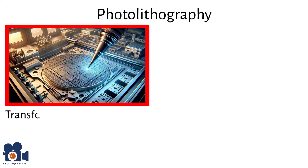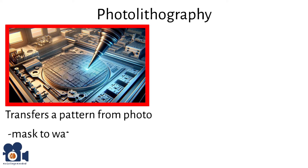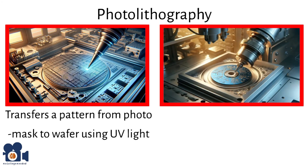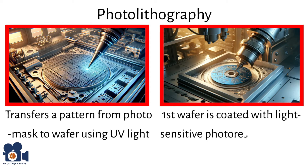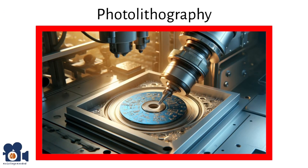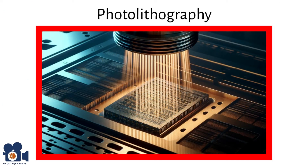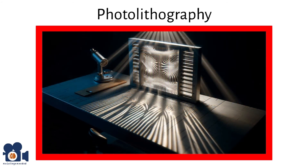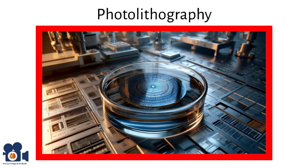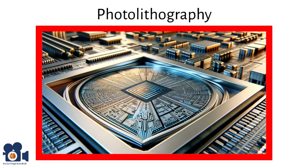The wafer then transitions to photolithography, which is a process of transferring a pattern from a photomask to the wafer using UV light. First, the wafer is coated with a light-sensitive photoresist material. Next, a photomask containing a circuit pattern is aligned over the wafer and exposed to ultraviolet light. The light passing through the mask alters the photoresist, creating a pattern. The wafer is then developed to remove either the exposed or unexposed photoresist, depending on whether a positive or negative photoresist is used, transferring the pattern from the mask to the wafer.